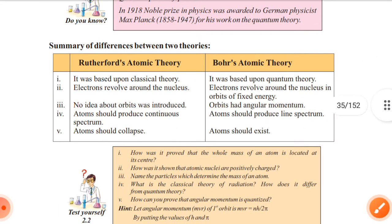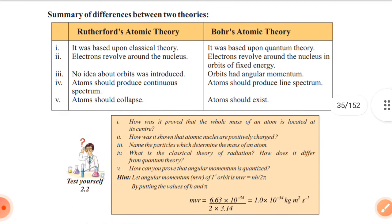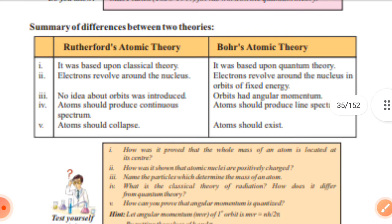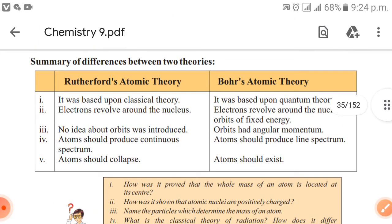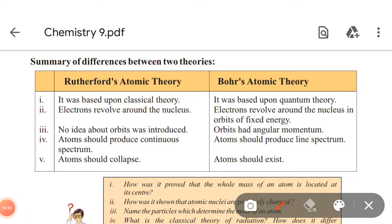Here is a small summary showing the difference between the two theories. Rutherford's theory: it was based upon classical theory, electrons revolve around the nucleus, no idea about orbits was introduced, atoms should produce continuous spectrum, atoms should collapse. Bohr's theory: it was based upon quantum theory, electrons revolve around the nucleus in the orbits of fixed energy, orbit had angular momentum, atoms should produce line spectrum, atoms should exist.